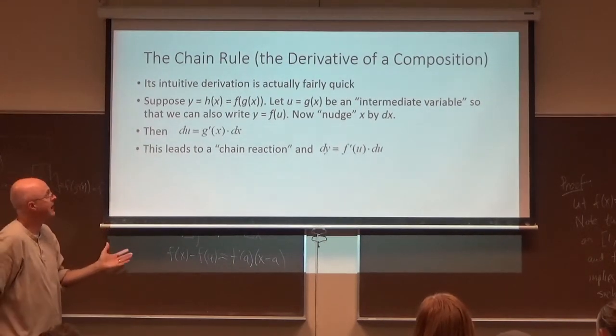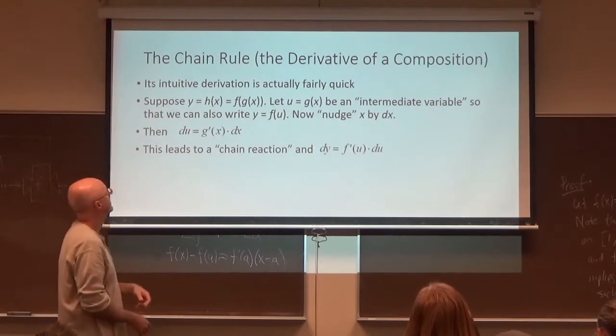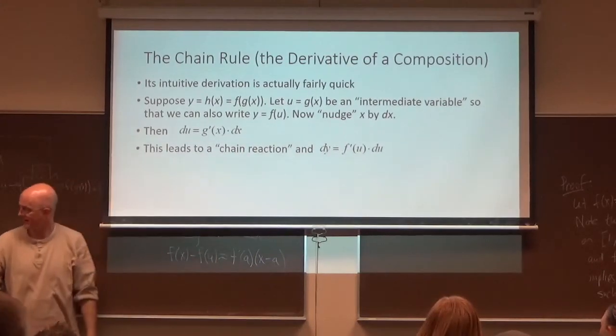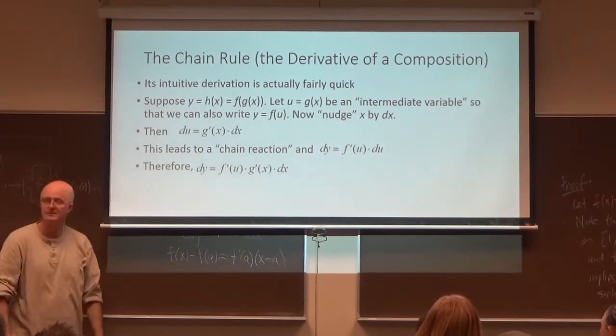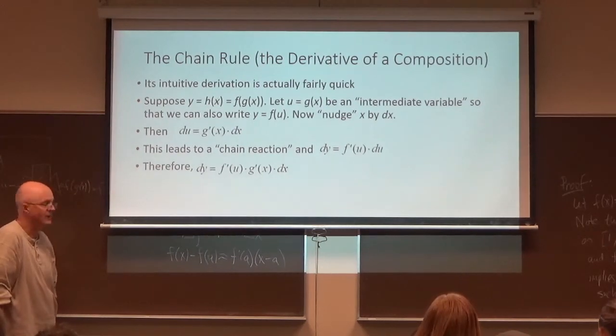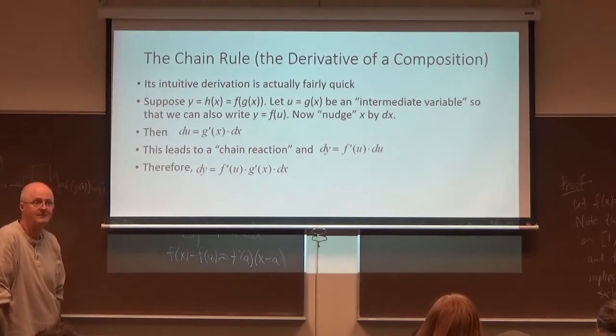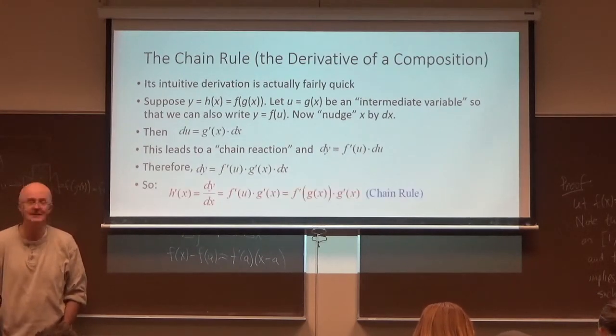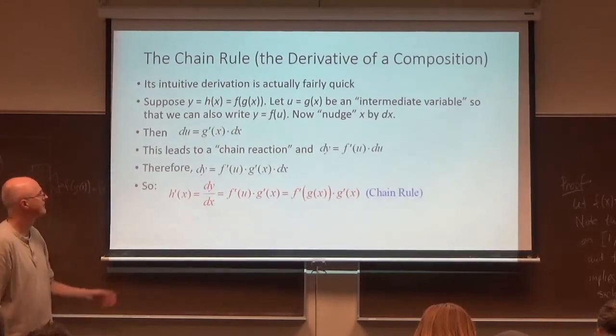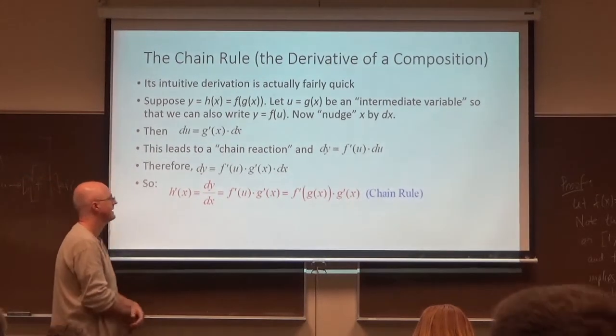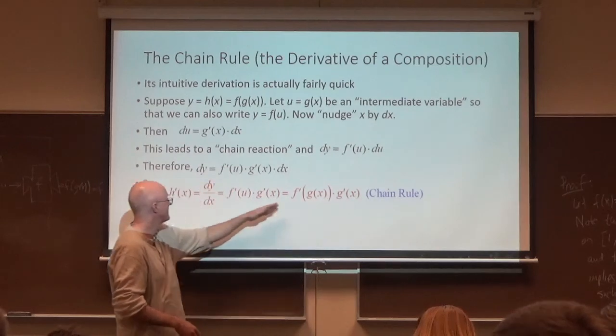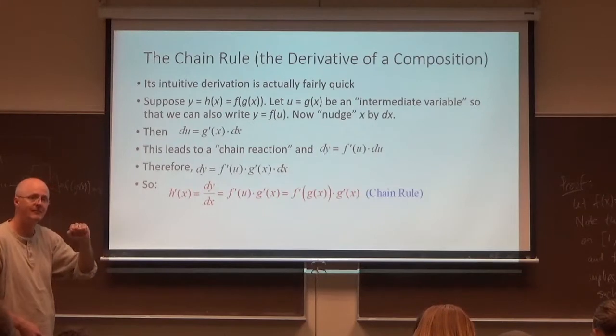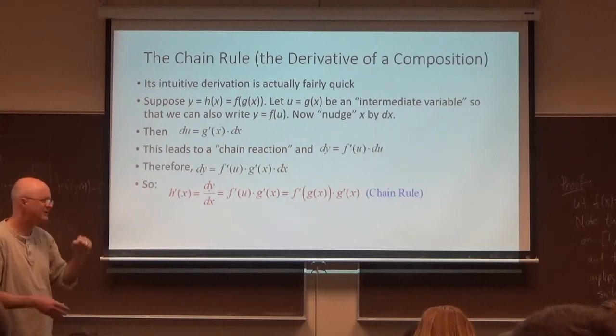To finish this, essentially now you just replace this du here with this expression. And that essentially is the chain rule in what I call differential form. We still need to divide both sides by dx. That's what we do next. And we get the chain rule. And in the final form over here, u gets replaced by g of x.